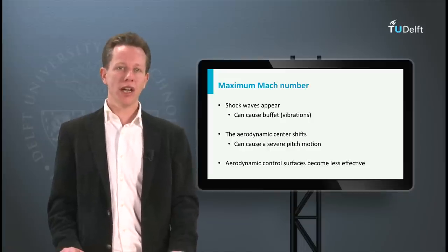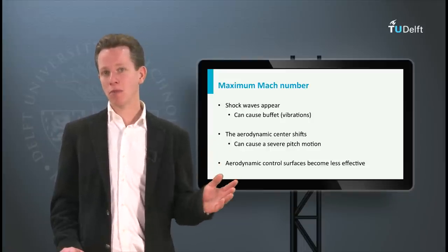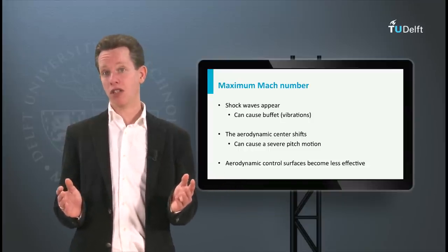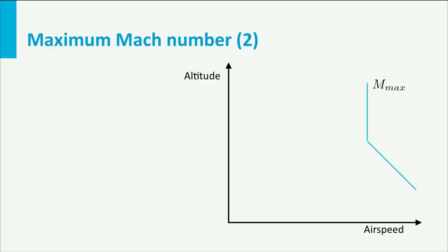Therefore, commercial aircraft typically have a maximum Mach number at which they are allowed to fly. If we would draw the maximum Mach number in the speed versus altitude diagram, it looks more or less like this. Since Mach number is a function of temperature, the corresponding airspeed decreases with a constant Mach number, will result in a decreasing speed limit with increasing altitude. Beyond 11 km altitude, temperature remains constant in the international standard atmosphere, and thus the speed limit associated to the maximum Mach number as well.